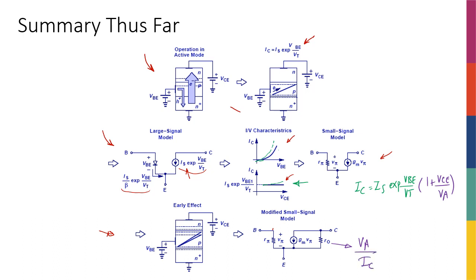So again, this reinforces that whenever you want to do a small signal analysis, you first need to find IC by doing the DC analysis, and then you can get started with the small signal analysis.